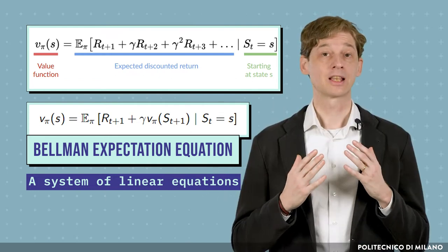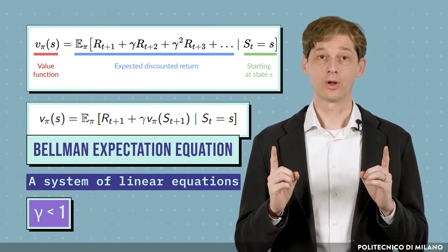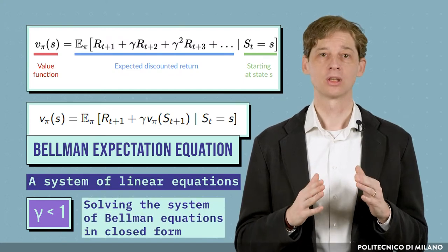Under the assumption that the discount factor is less than 1, the value function of any policy π can be obtained by solving the system of Bellman Equations in closed form.